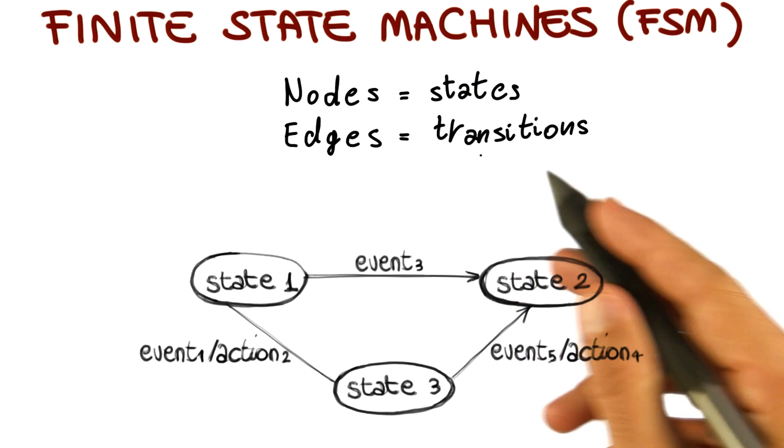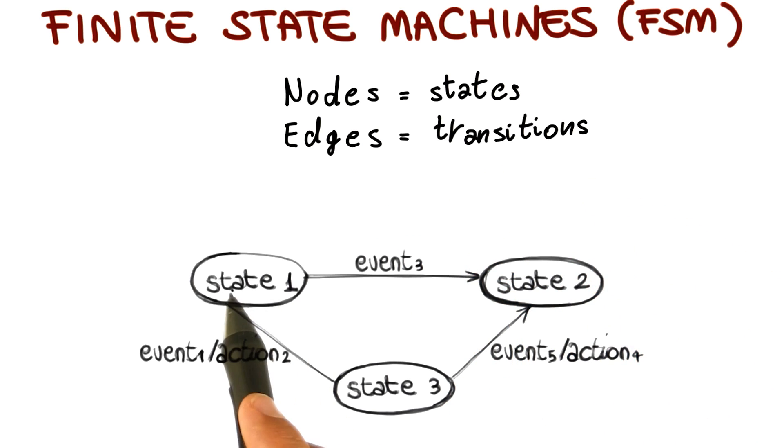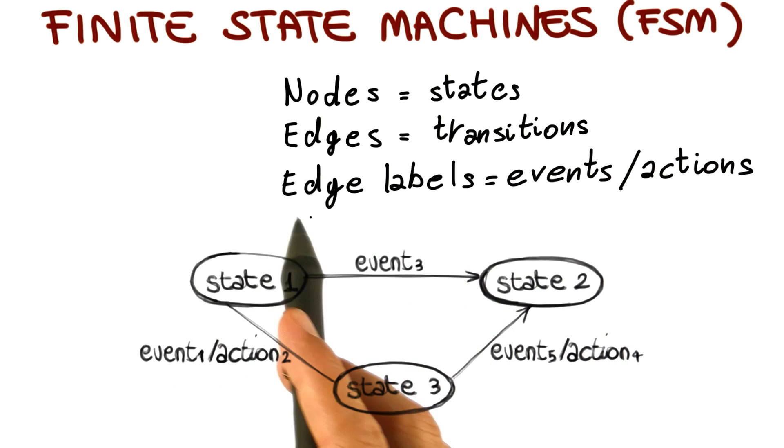Edges represent transitions between states. For instance, in this case, we have one edge from state one to state two, and that means that the system can go from state one to state two.